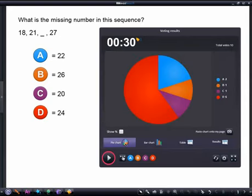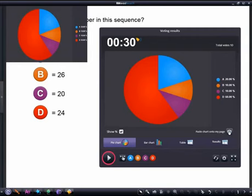When the time is up, we can select the pie chart display option and select to show the results by percentage. We can then hit the paste results onto my page button here.